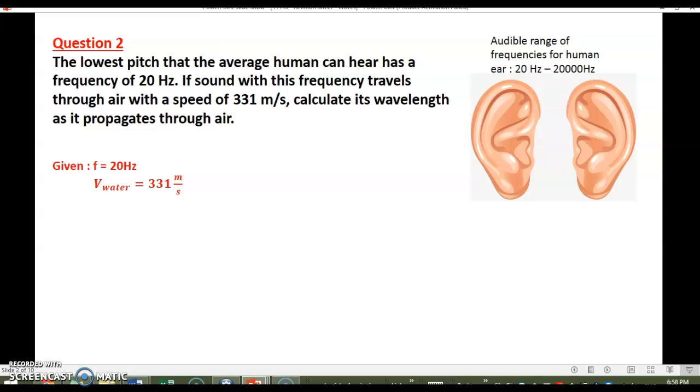So the auditory range of frequencies for a human ear is 20 hertz to 20,000 hertz. And we are given the frequency and the speed of the sound in water. So what can we do in order to find the wavelength?